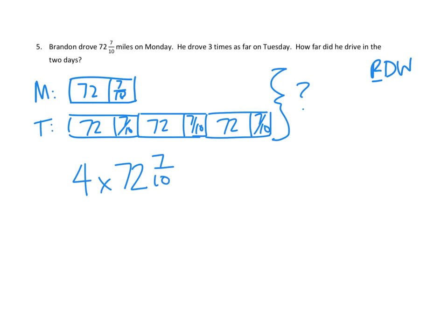Excellent. And now we've got to work our problem through. We've got to distribute our 4 and multiply it by both parts of our mixed numbers. That's 4 times 72 plus 4 times 7 tenths. Now, 4 times 72, we might have to do off to the side here. 72 times 4. 4 times 2 ones is 8, and 4 times 7 tens is 28 tens. Okay, 288.